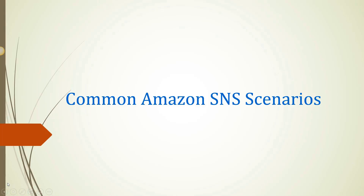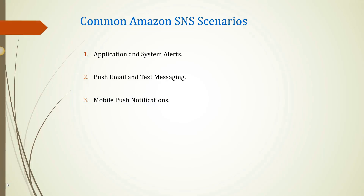Now let's talk about common Amazon SNS scenarios. The first is application and system alerts. Application and system alerts are notifications triggered by predefined thresholds, sent to specified users by SMS and/or email. For example, since many AWS services use Amazon SNS, you can receive immediate notification when an event occurs, such as a specified change to your AWS Auto Scaling group.